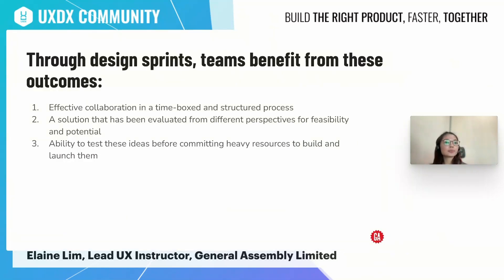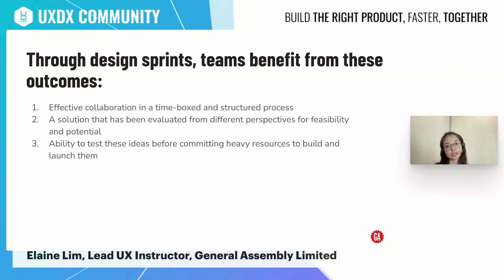True design sprint teams benefit from having effective collaboration in a time-boxed and structured process. An optimal size of a sprint team would be six to eight people, allowing them to contribute ideas and opinions in a very meaningful way, and they also feel very vested in terms of the sprint outcomes. Because they are focusing on a single challenge, they are able to develop a solution and evaluate it from different perspectives for feasibility and potential, increasing the chances that the solution will be successful. And the ability to test ideas before committing resources to build is a great advantage, especially for companies with limited resources.